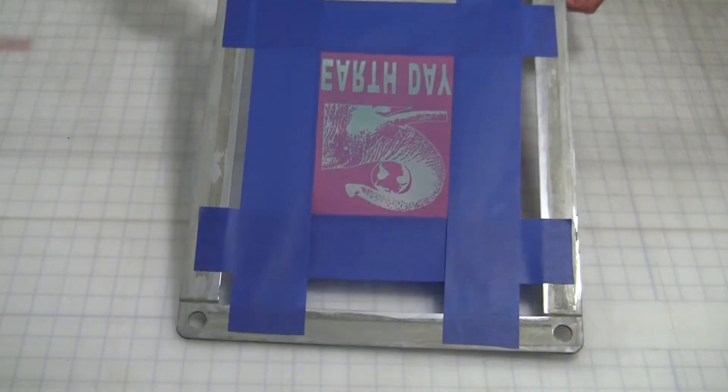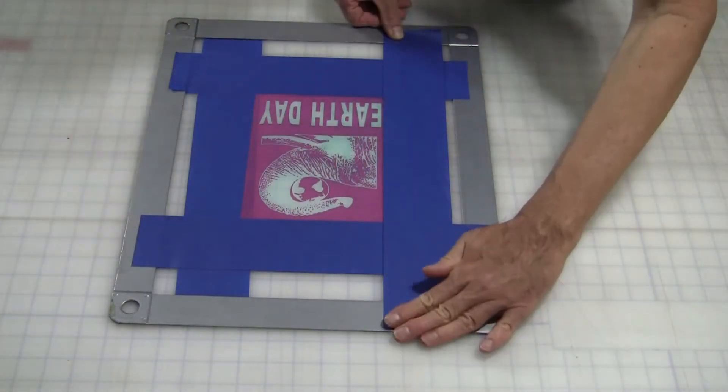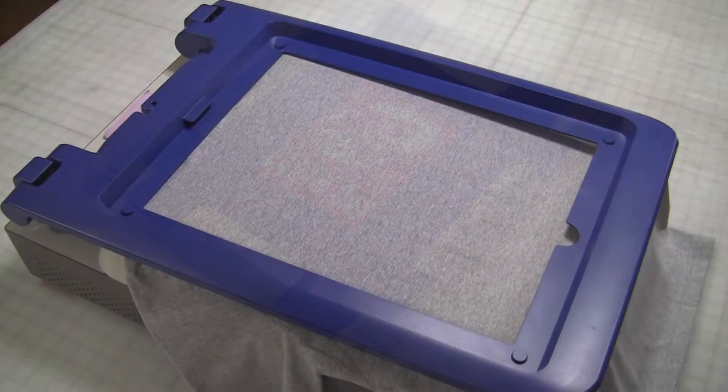Turn it over and tape the other side. It's now ready to load into your UDO.